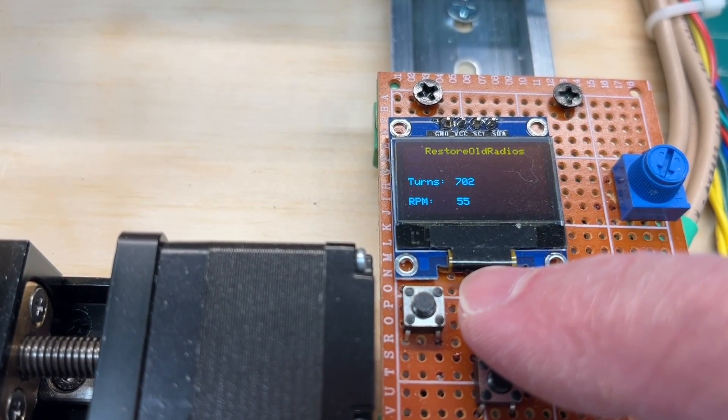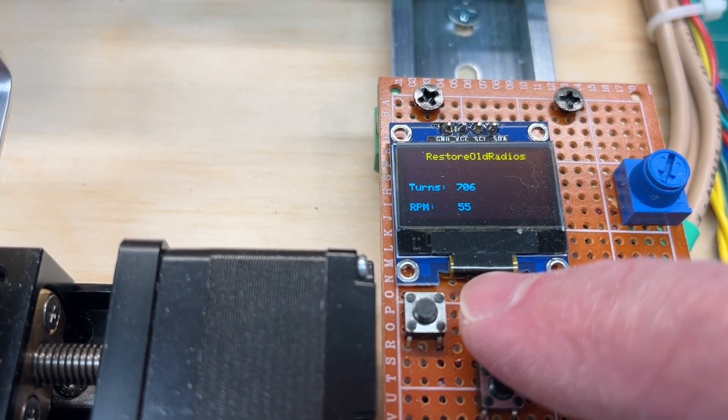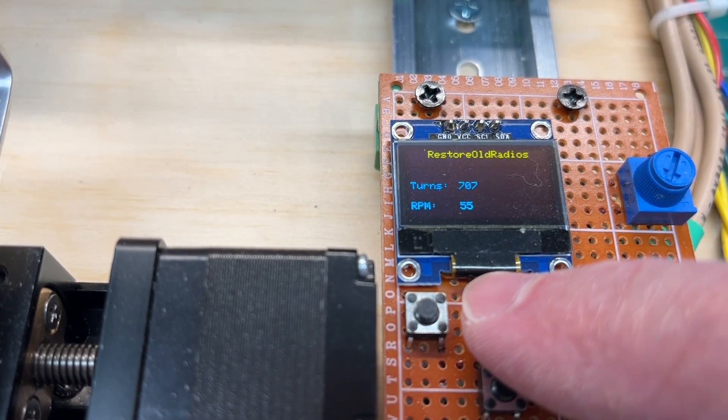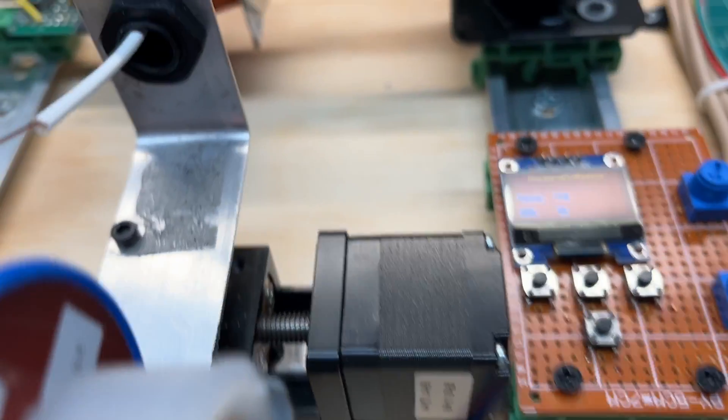As you can see, I'm moving in on the 709 turns needed. I'll try to cut it off close to that, and here I went 710, so I'll just remove one turn.